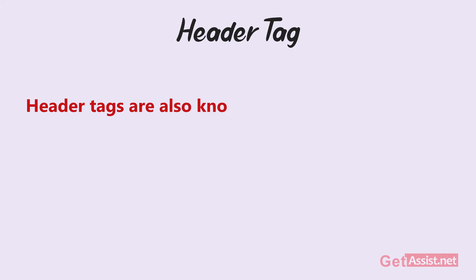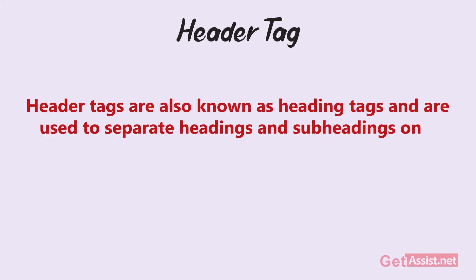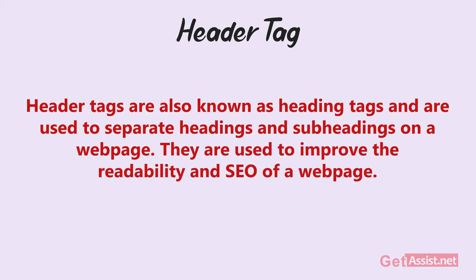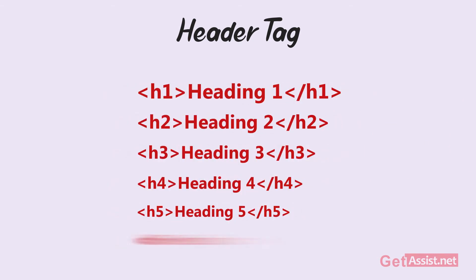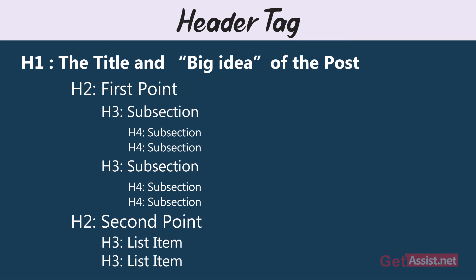Header tags are also known as heading tags and are used to separate headings and subheadings on a web page. They are used to improve the readability and SEO of a web page. Header tags are used in order of importance from H1 to H6, where the H1 tag is used for the title. H1 is used for the title of a post — they are usually keyword-centric and are created in a way to attract readers and make them understand what the post is going to be about.